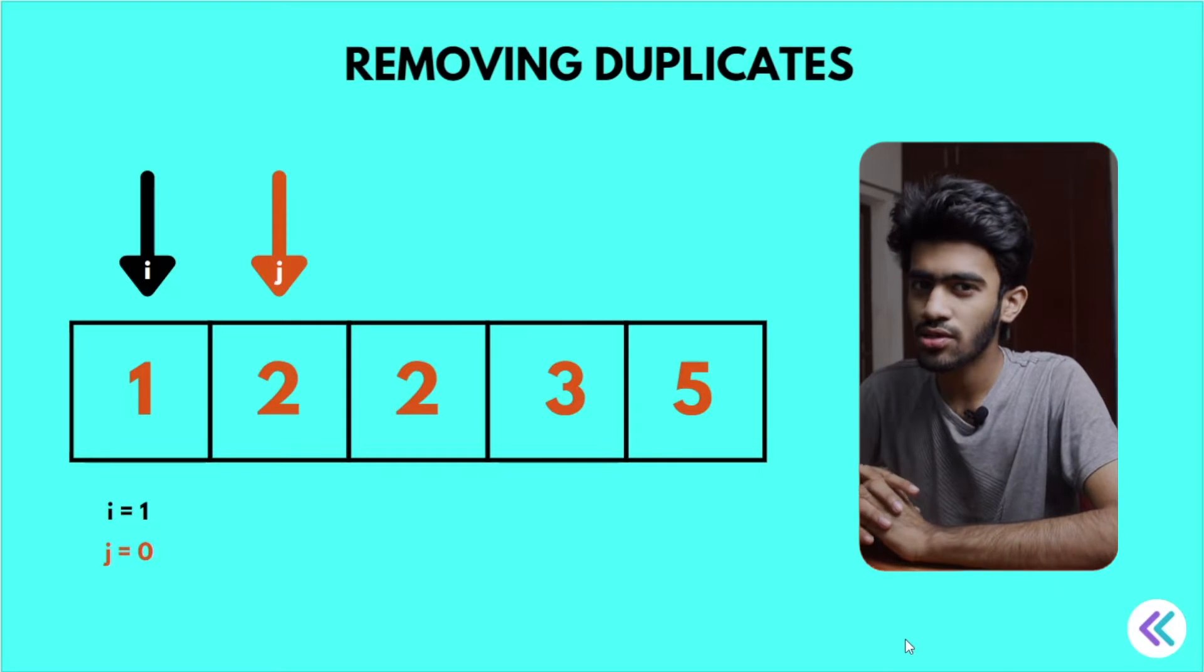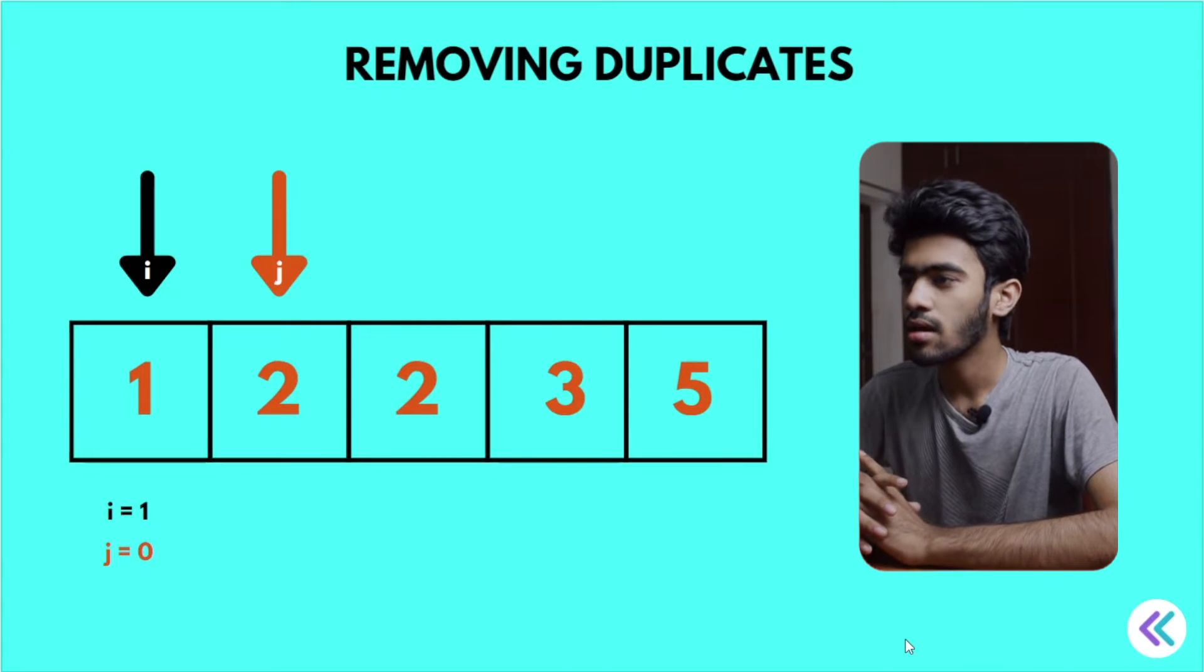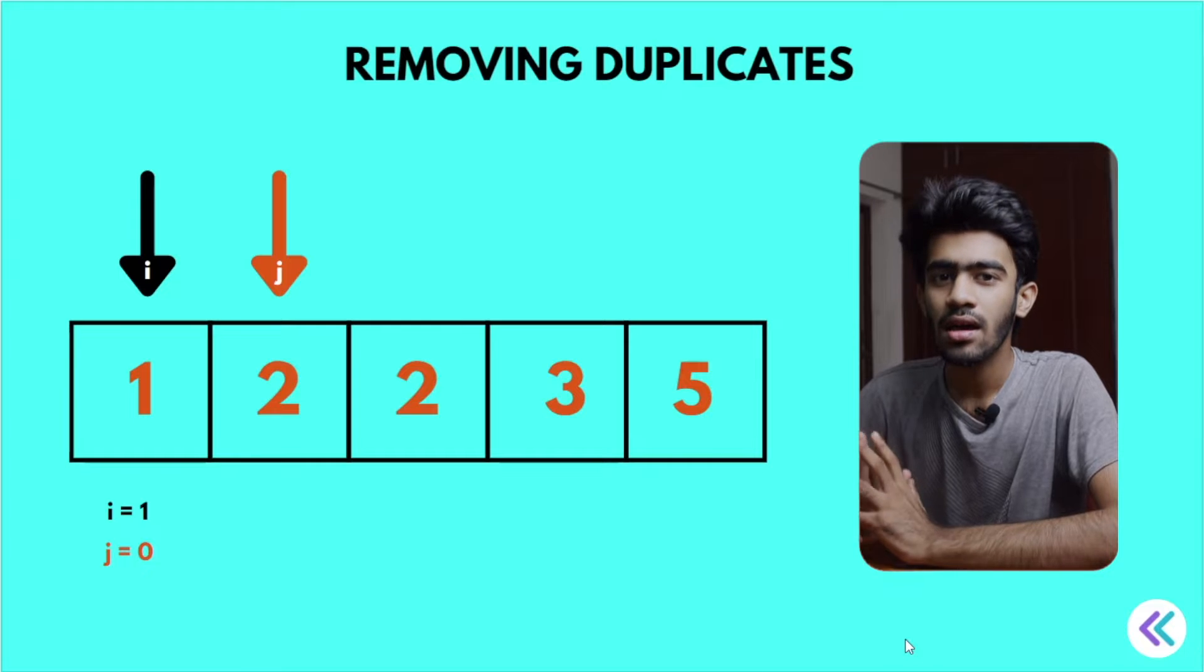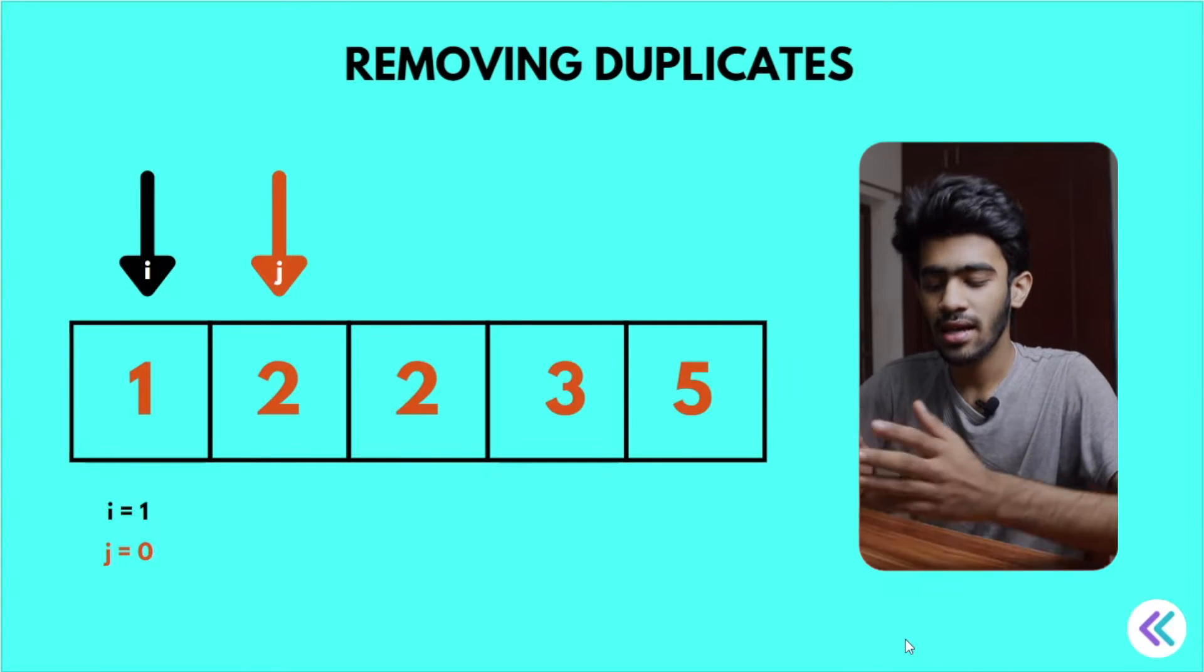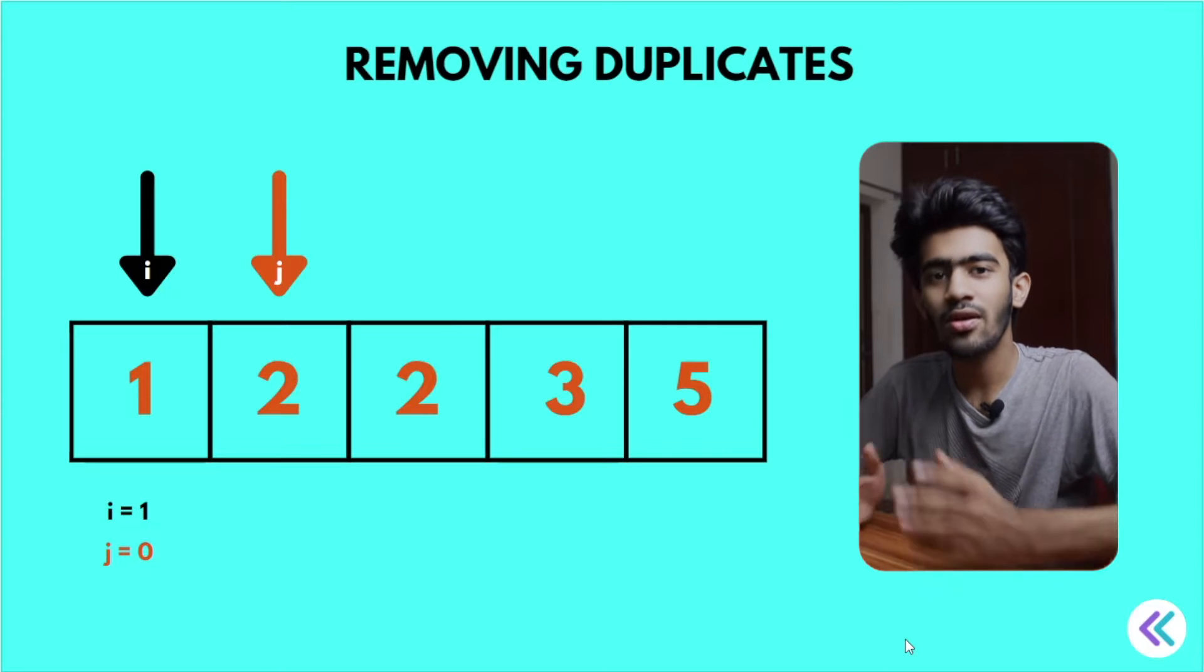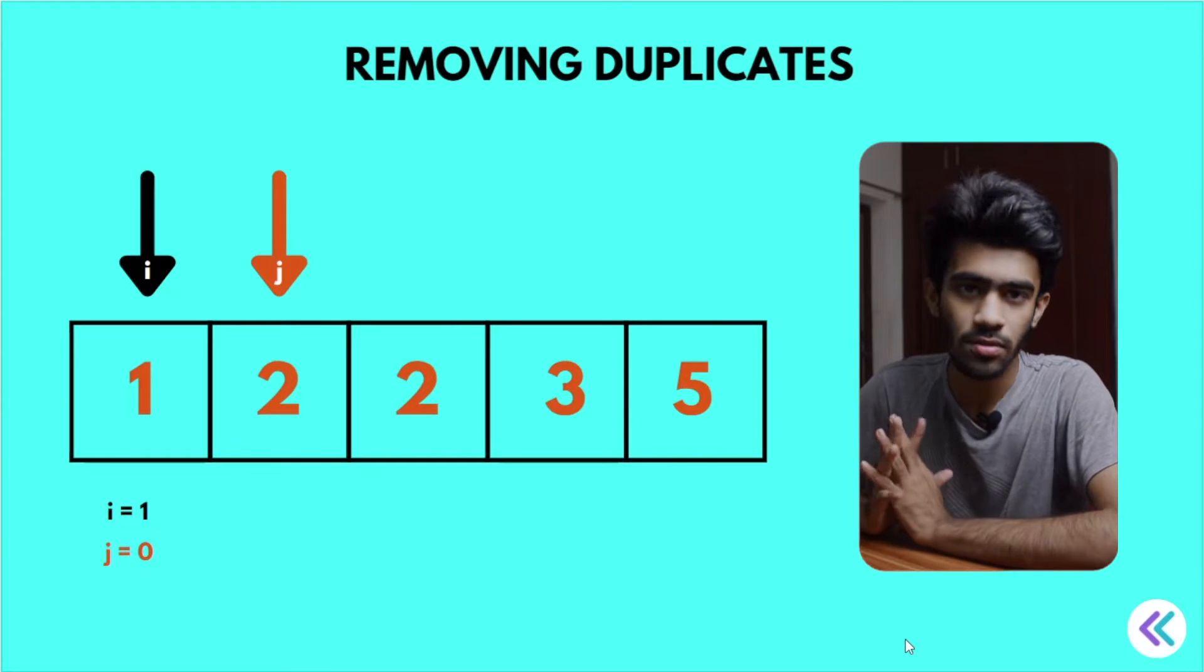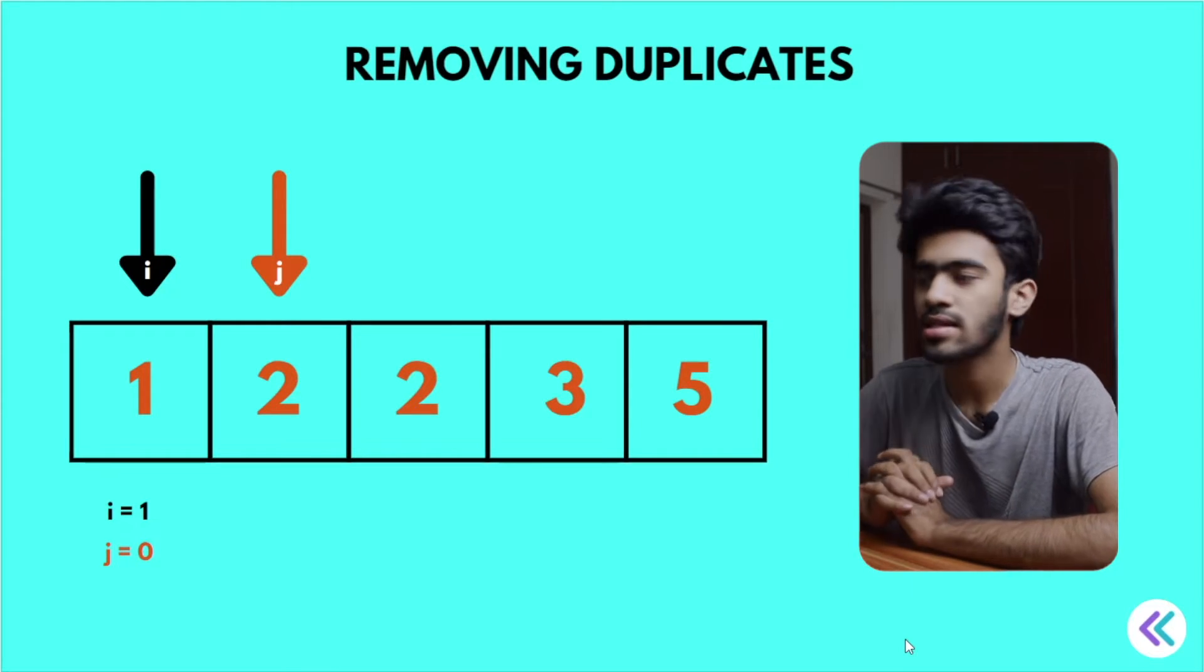So in this question, we have a sorted array. Now in sorted array, we remove duplicates - remove the duplicates and return the length of the array. That's the question.